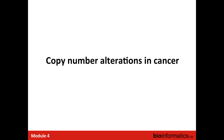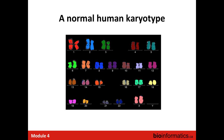Before delving into the nitty-gritty details of how we do the analysis, let's go over some background on copy number alterations. This is a normal human karyotype—a spectral karyogram with chromosome painting where each chromosome shows up as a unique color. It makes it easy to appreciate that the structure of the human genome is diploid, with two copies of each chromosome, one from each parent.